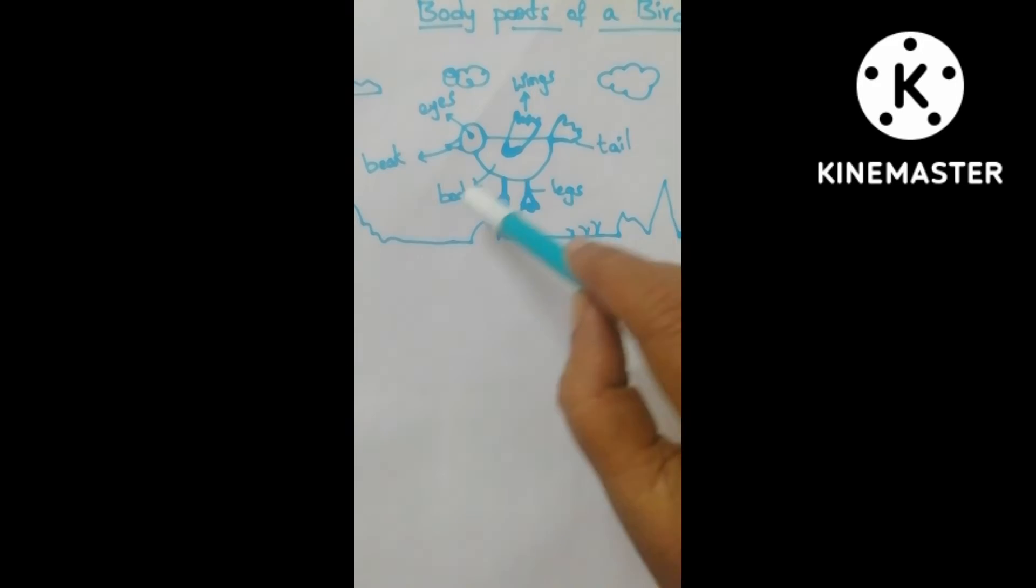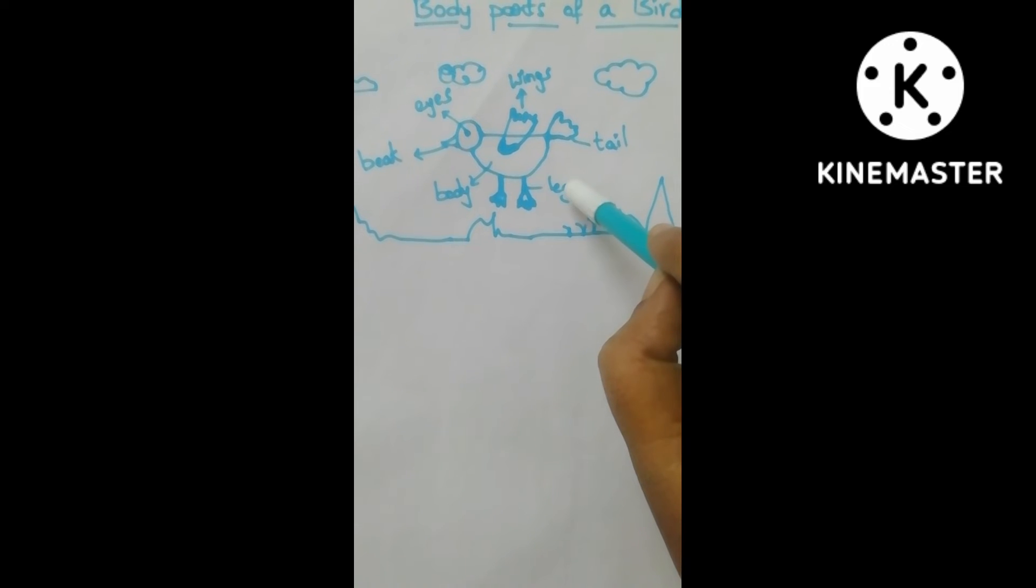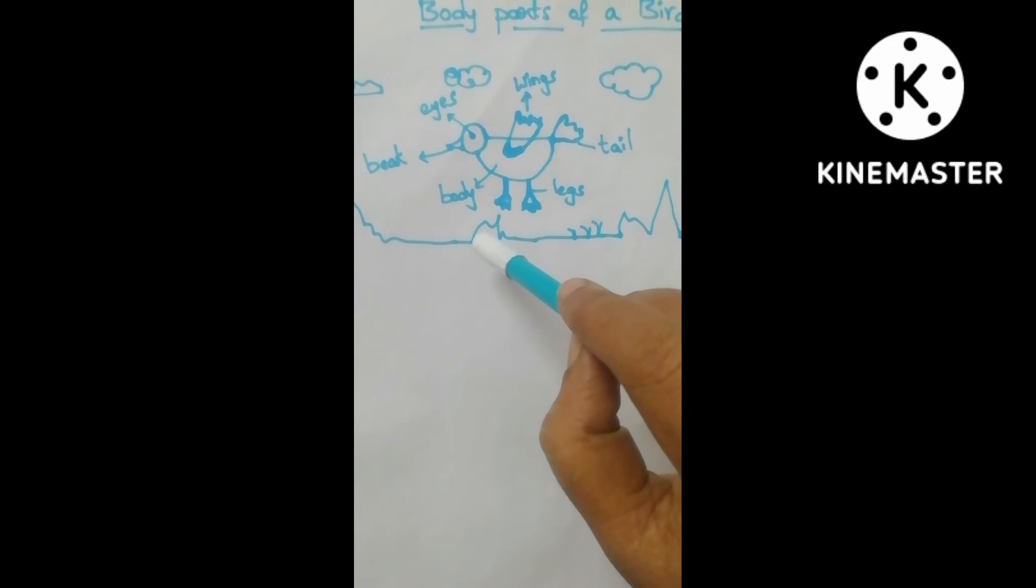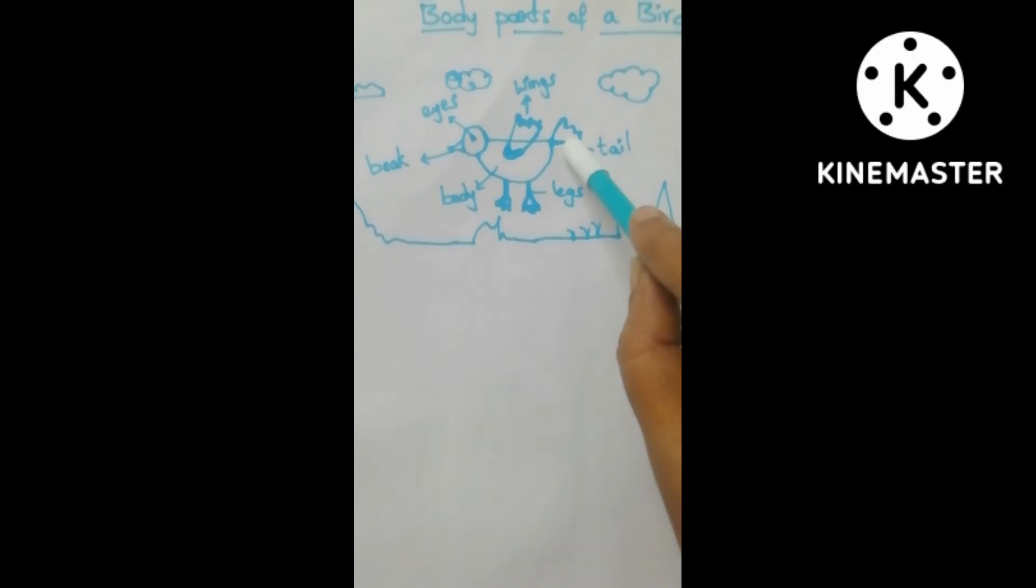What else? A tail. And some birds have four legs, some birds have two legs. The feathers - wings are covered with feathers.